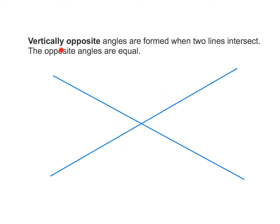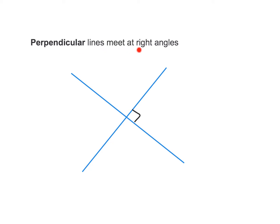The next special relationship is vertically opposite angles, which are formed when two lines intersect — the opposite angles are equal. In this diagram, angle A is vertically opposite to this angle over here, therefore A equals A. Likewise, this angle is vertically opposite to this angle, therefore B equals B. Finally, perpendicular lines meet at right angles. That little box denotes 90 degrees, so each of the four angles formed must be 90 degrees, since each straight line equals 180 degrees. We can also say that opposite angles here are vertically opposite to each other.